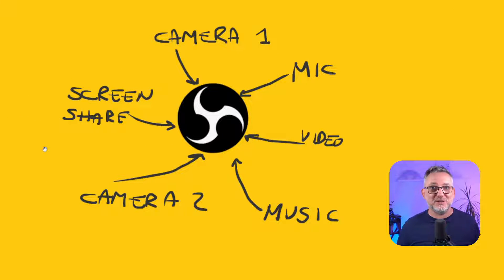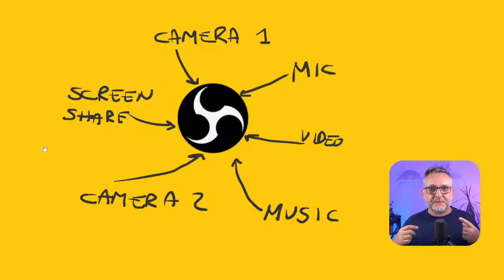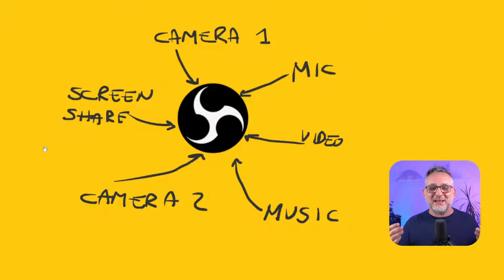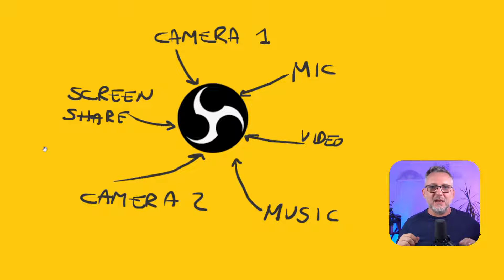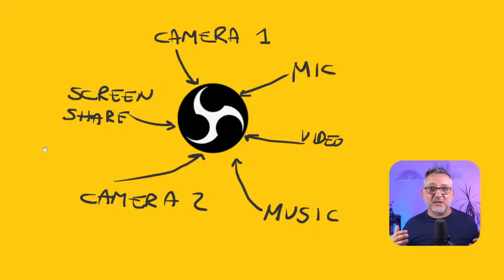We don't want to overcomplicate things just for the sake of it, so there are obviously advantages. OBS, or any other broadcasting software, can take input from many sources and send them all combined to your video conferencing platform. On Zoom, you have only one camera and one audio — but with OBS, you can combine multiple cameras, add lower thirds, graphics, overlays, and transitions, and have multiple scenes. A broadcasting software allows you to have a homemade TV studio where you create different scenes — a bit like different slides in a PowerPoint, but much more dynamic.